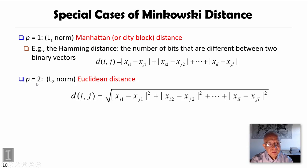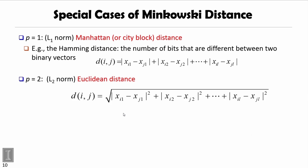If p equals 2, also called L2 norm, is Euclidean distance defined in the typical way. This is a very familiar one, I think, for all people.